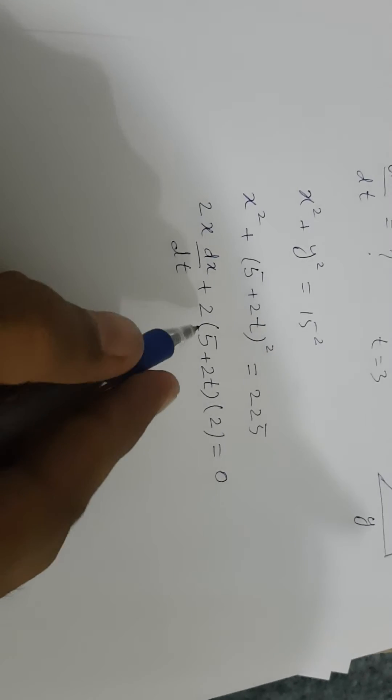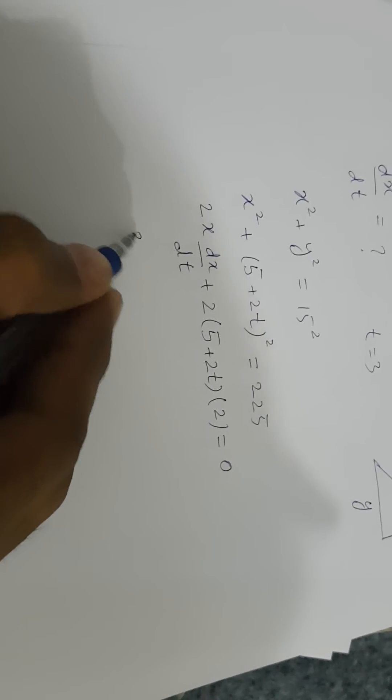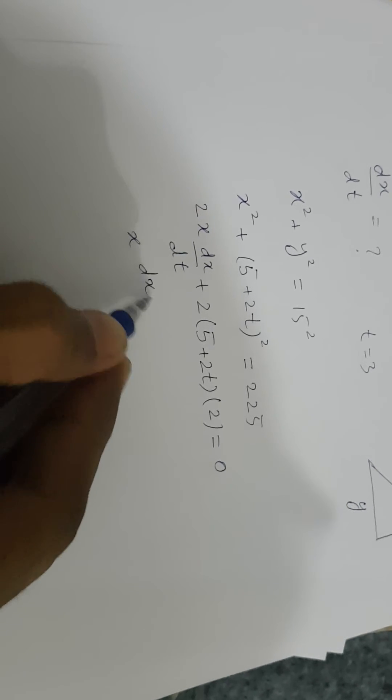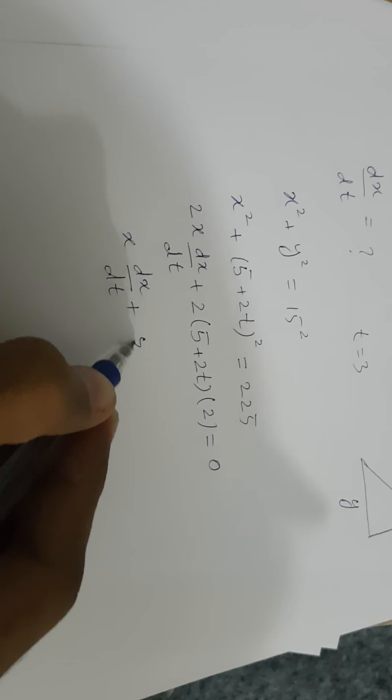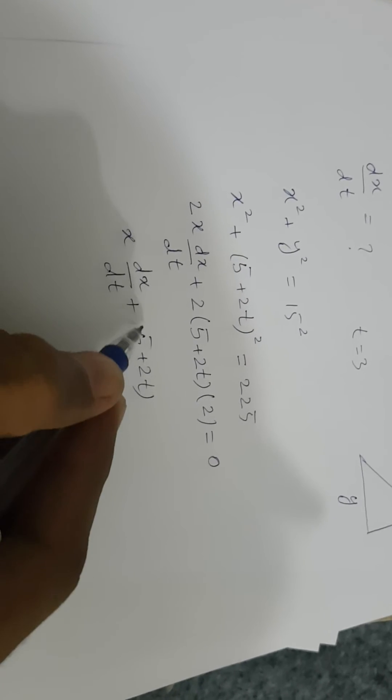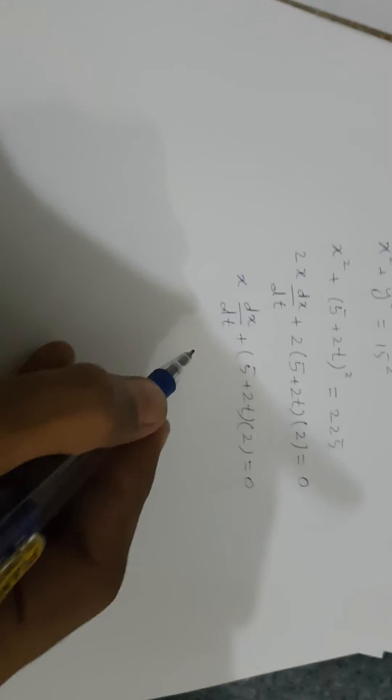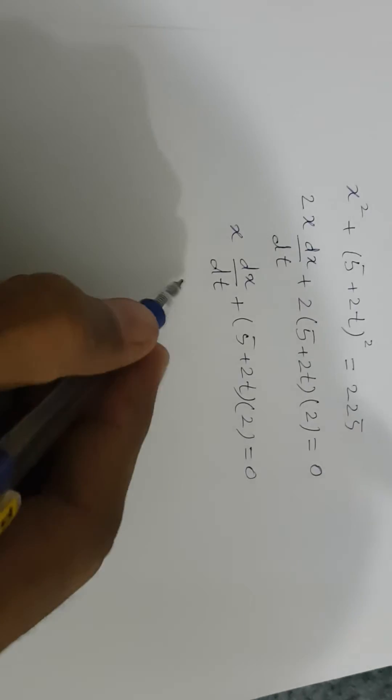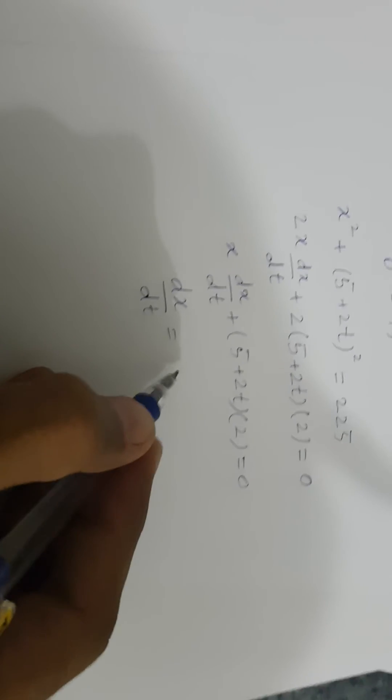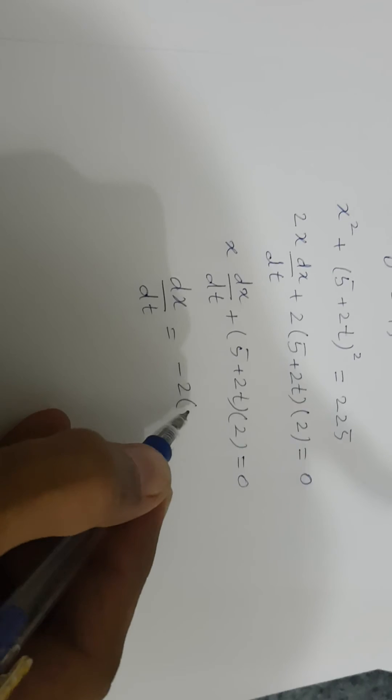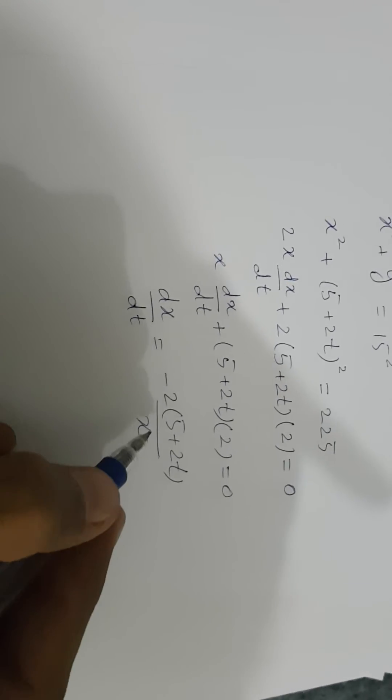If we take 2 as a common factor from both terms, this becomes x(dx/dt) + (5 + 2t) = 0.